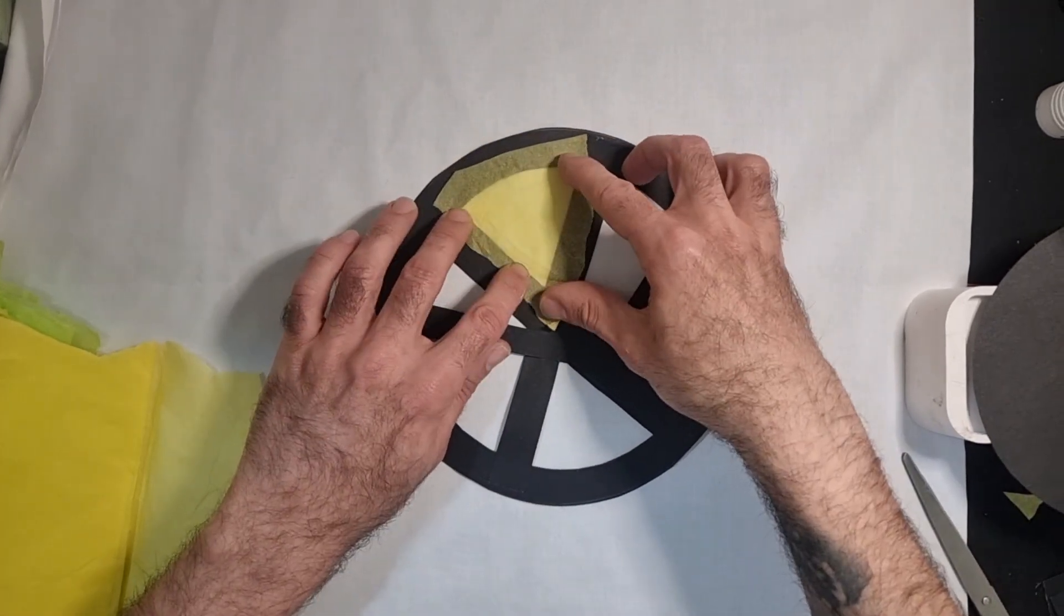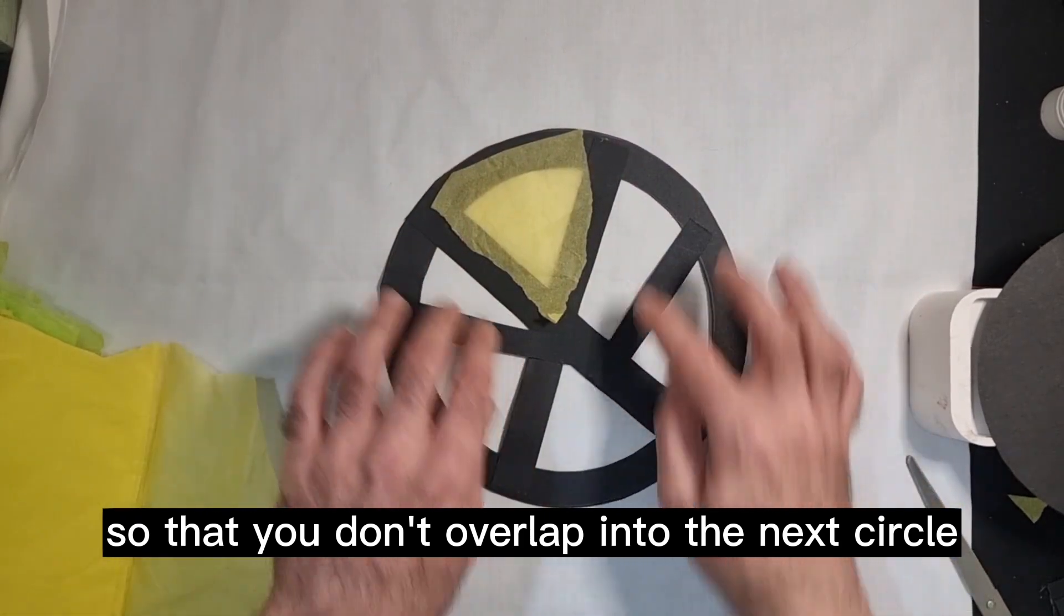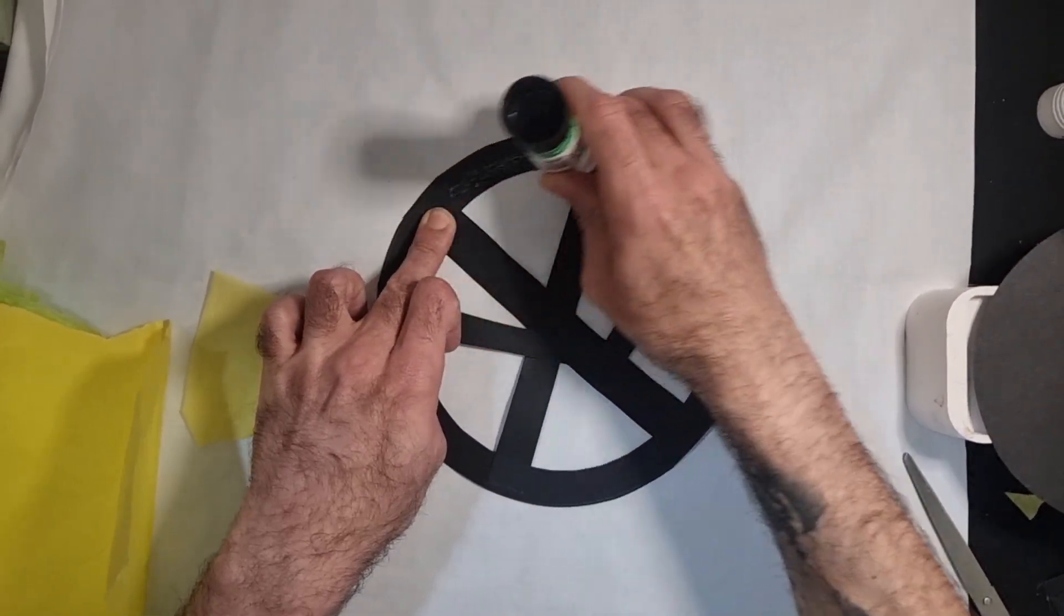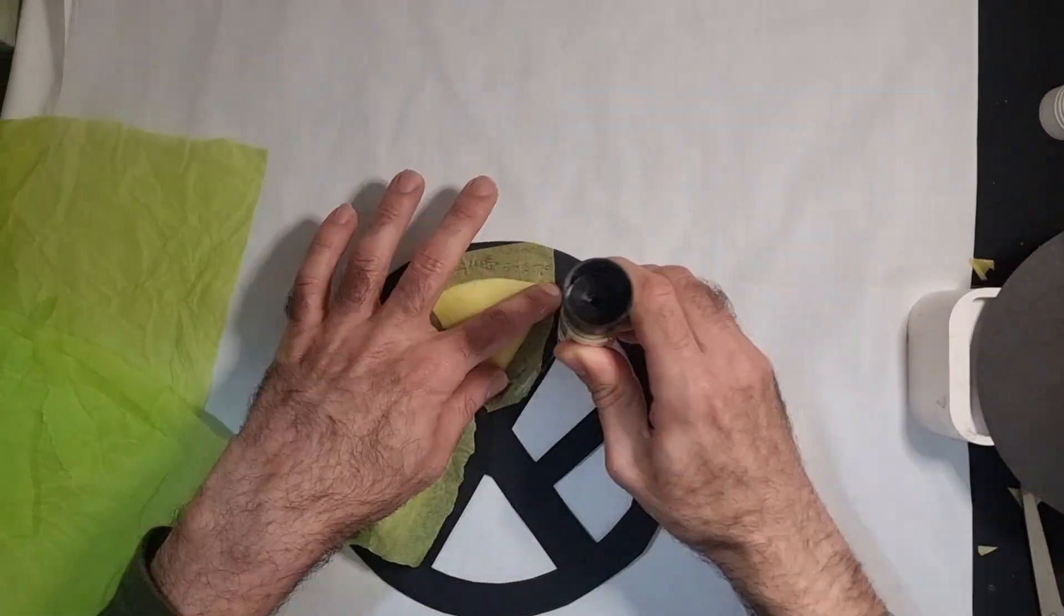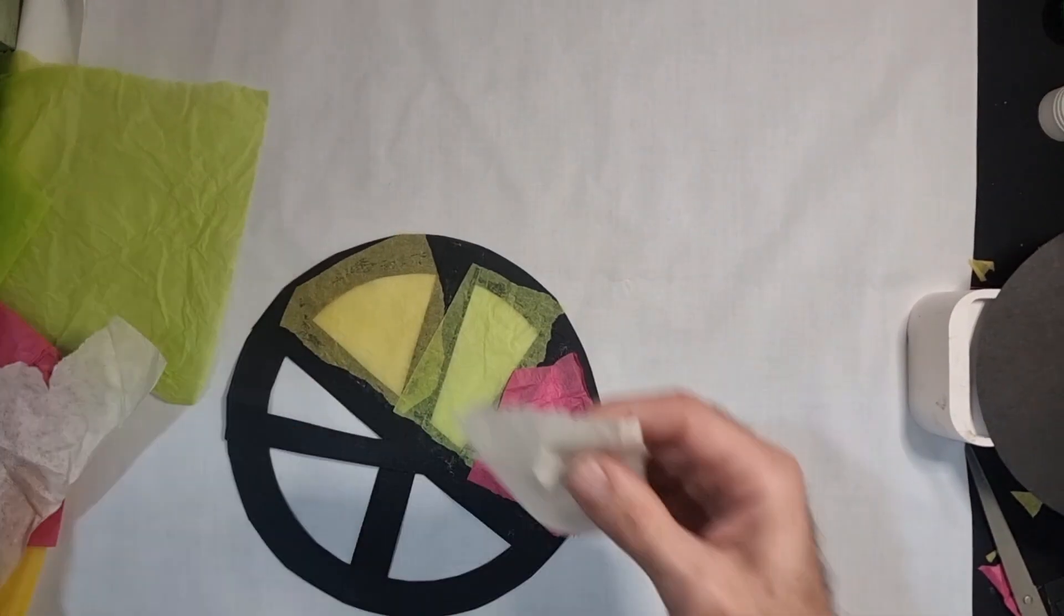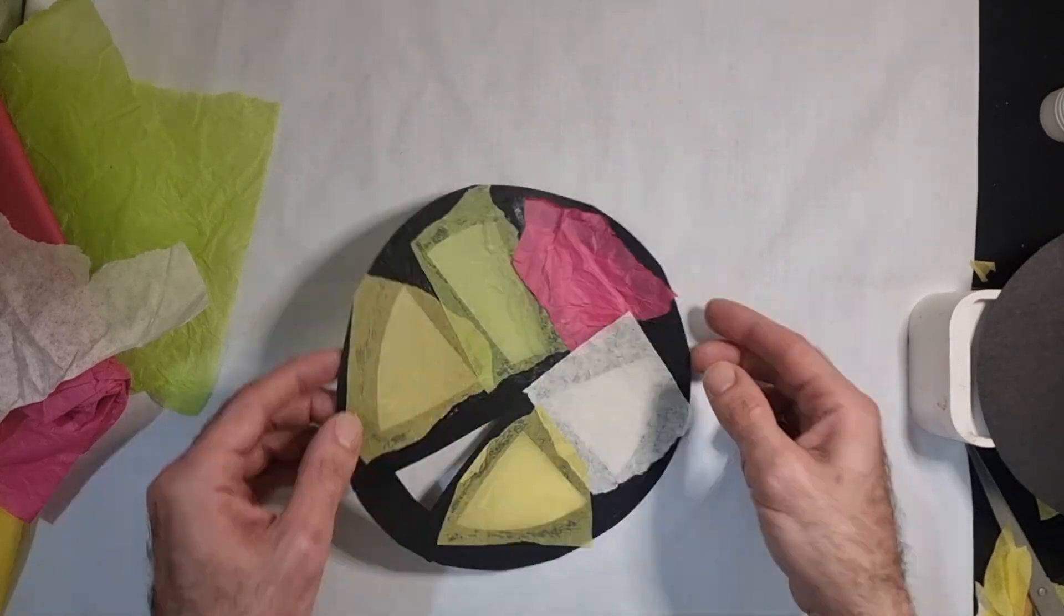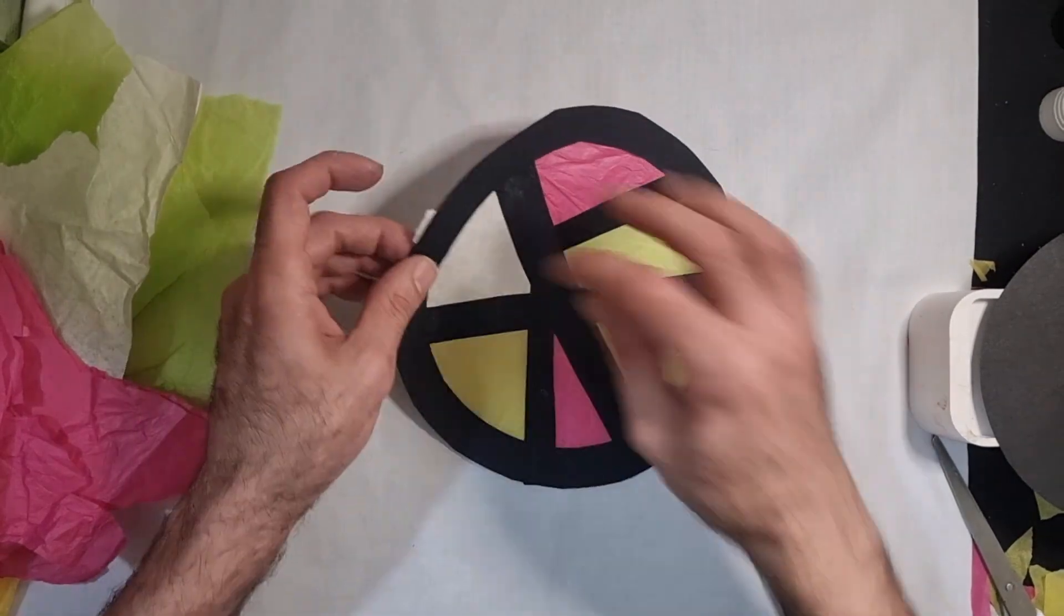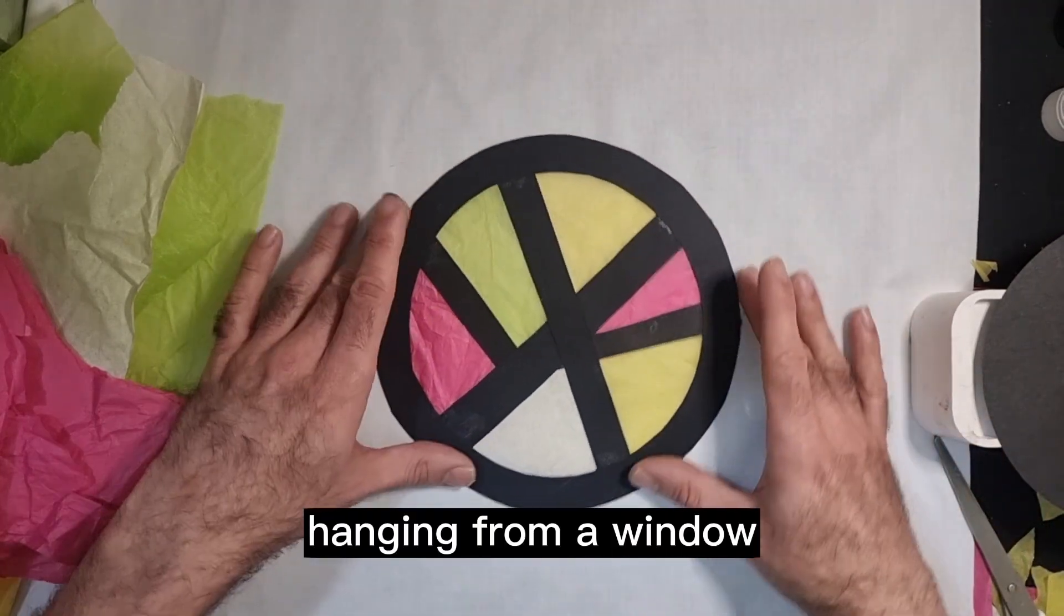You want to try and get them as on the black card as possible so they're there. You don't want overlapping to the next circle or anything, like the next hole should I say. So I'm just going to apply some glue. And then we have our first stained glass window. This looks really cool when hung up with a piece of string hanging from a window.